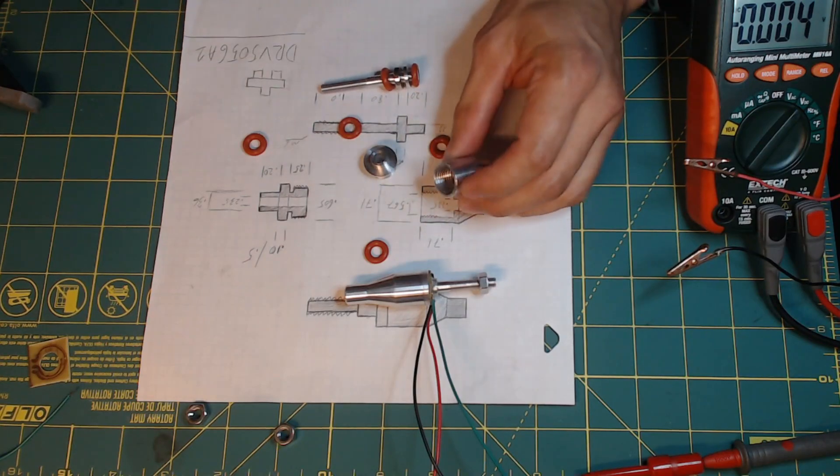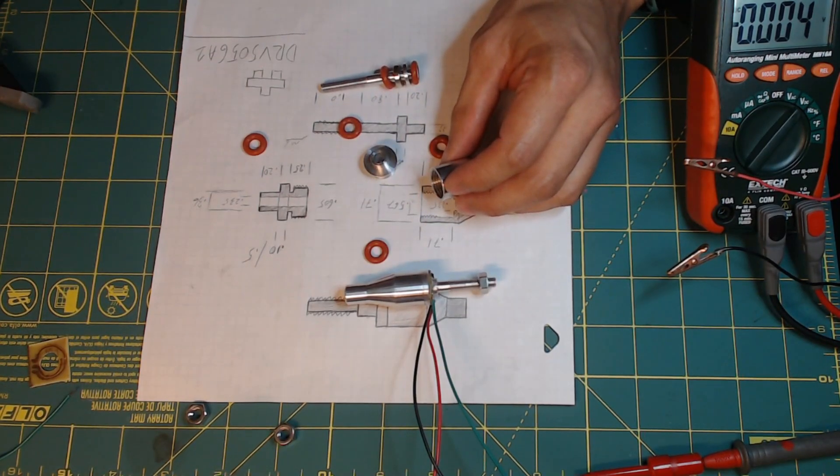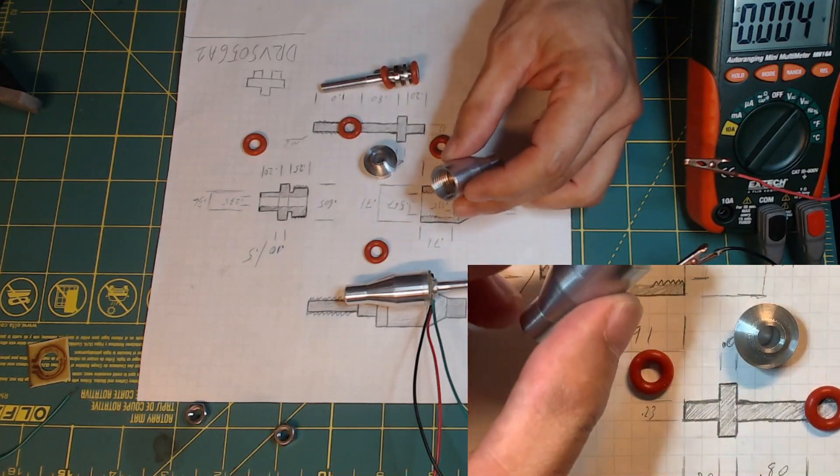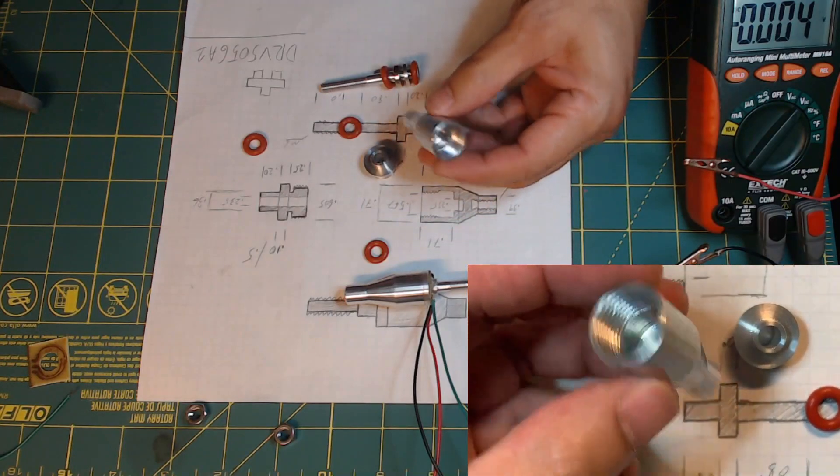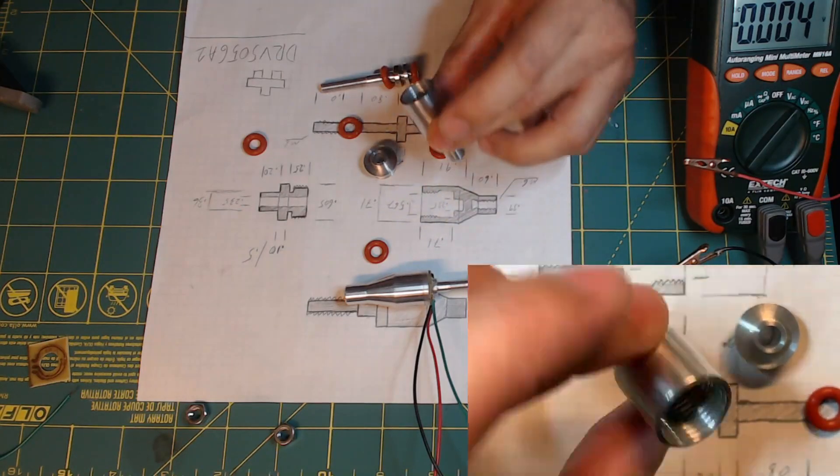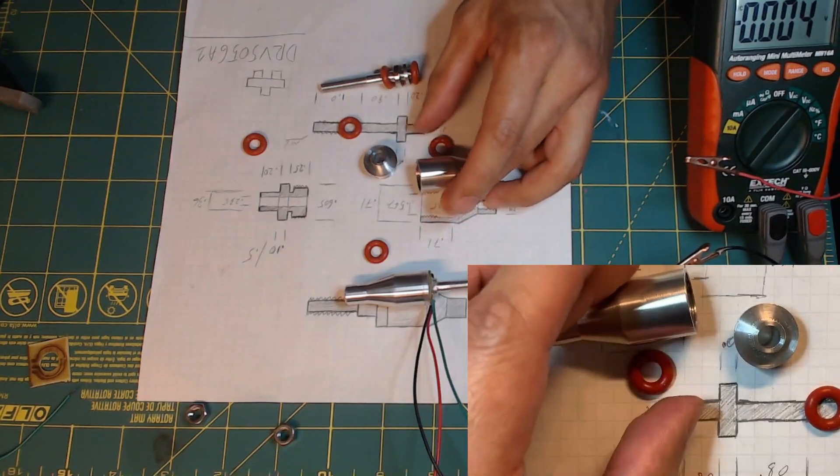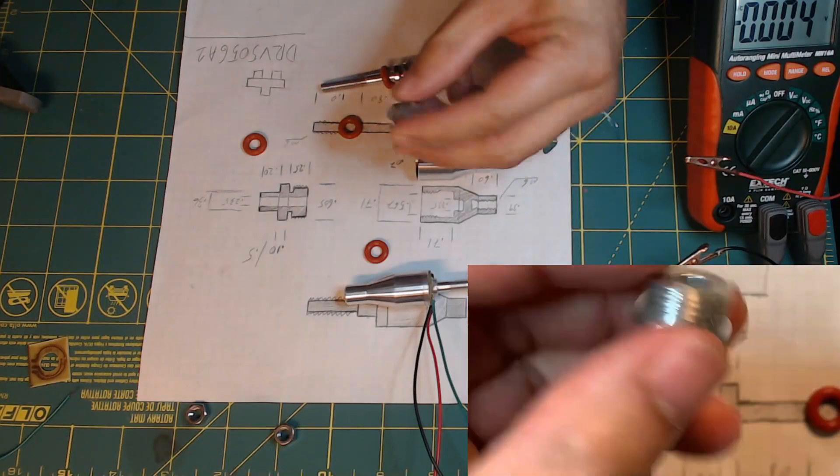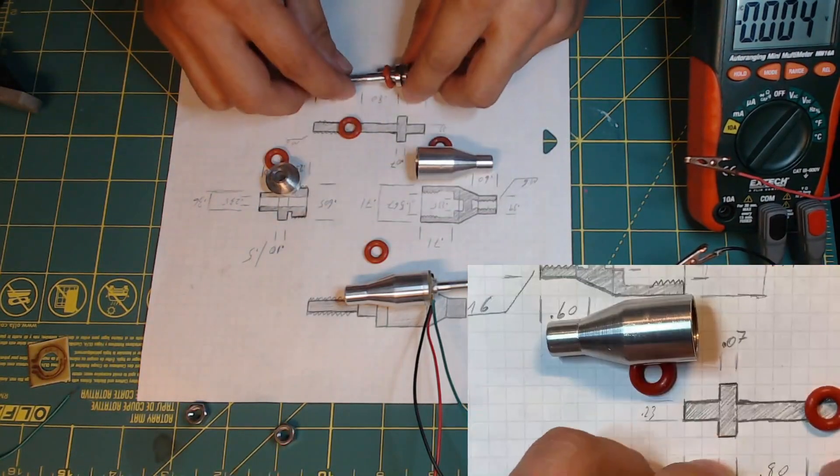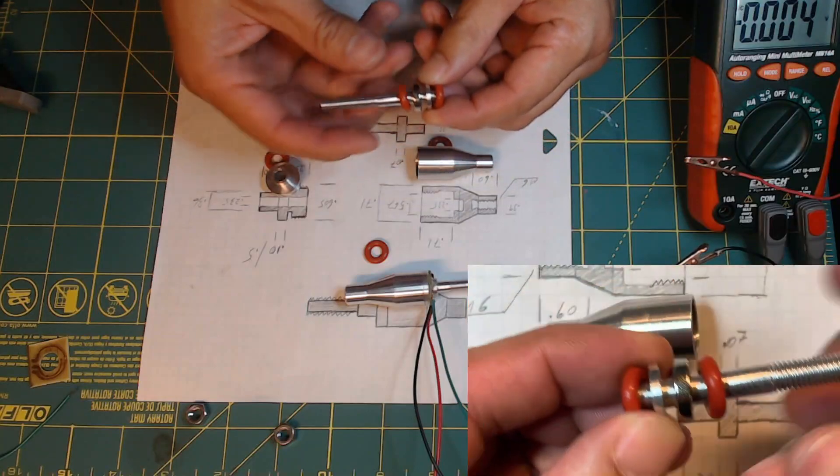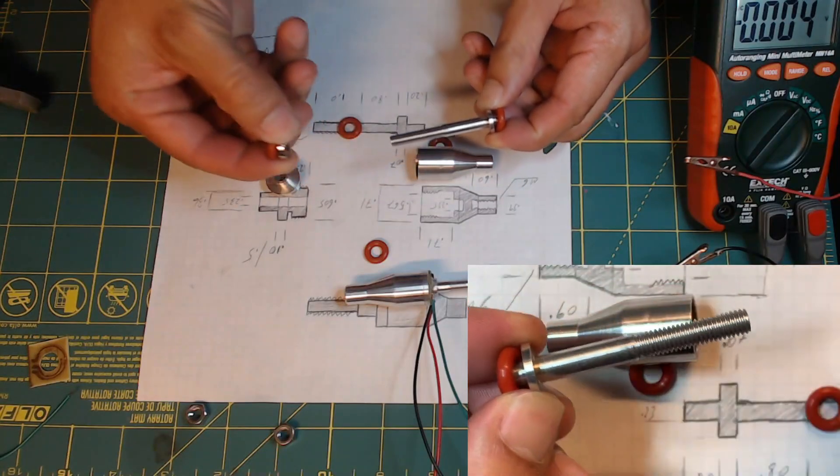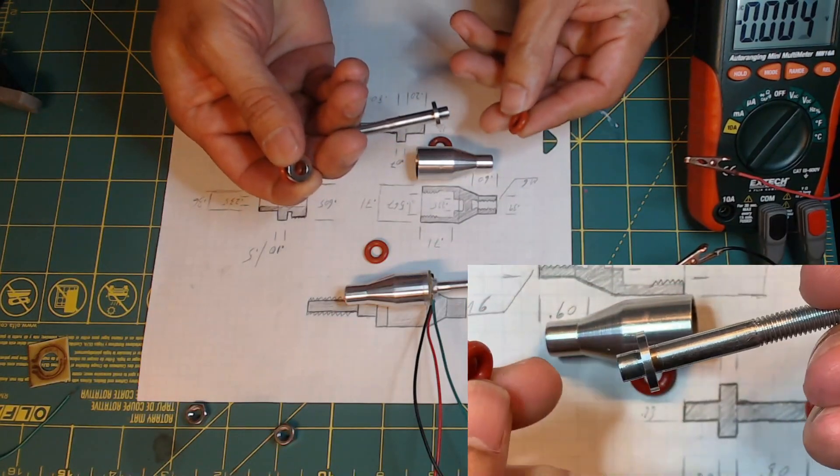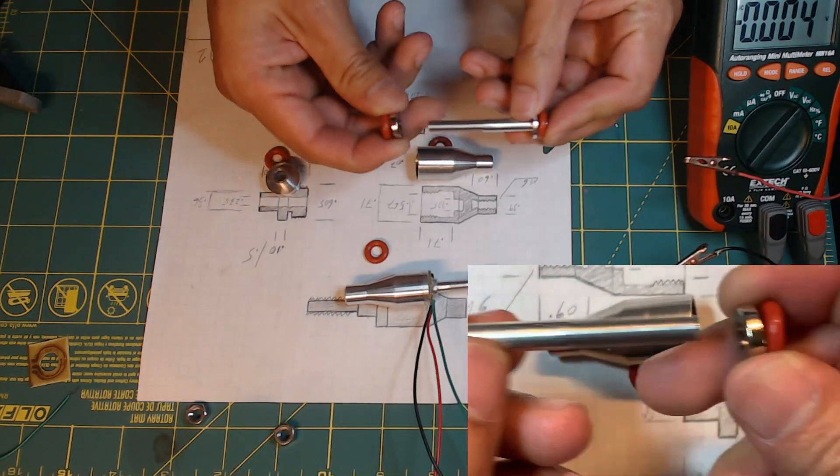So again this is the body of the component. We have the cap, shaft, and the magnet.